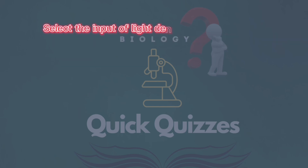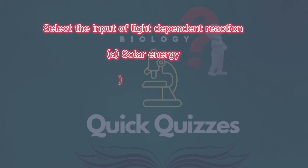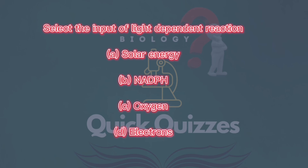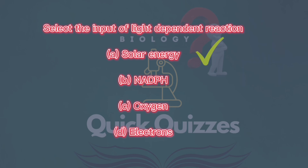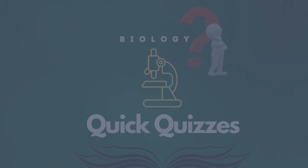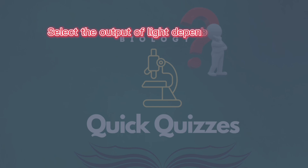Select the input of light-dependent reaction: A) solar energy, B) NADPH, C) one oxygen atom, D) electrons. Correct answer: A, solar energy.